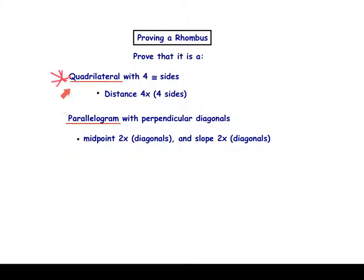So either prove it's just a quadrilateral with four congruent sides, or prove that it's a parallelogram with perpendicular diagonals. It's your choice, but the distance approach is definitely the easiest way to go, especially because with our parallelograms, distance works on all. Distance, distance, distance. Next page.